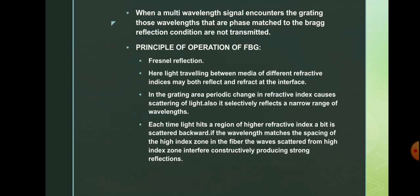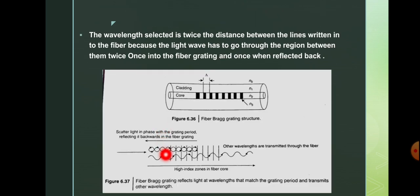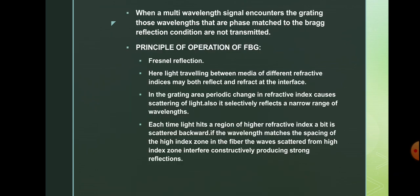The main principle of operation of fibre Bragg grating is Fresnel reflection. Light traveling between media of different refractive indices may both reflect and refract at the interface. In the grating area, periodic changes in the refractive index cause scattering of the light — where refractive index alternates between higher and lower values periodically.